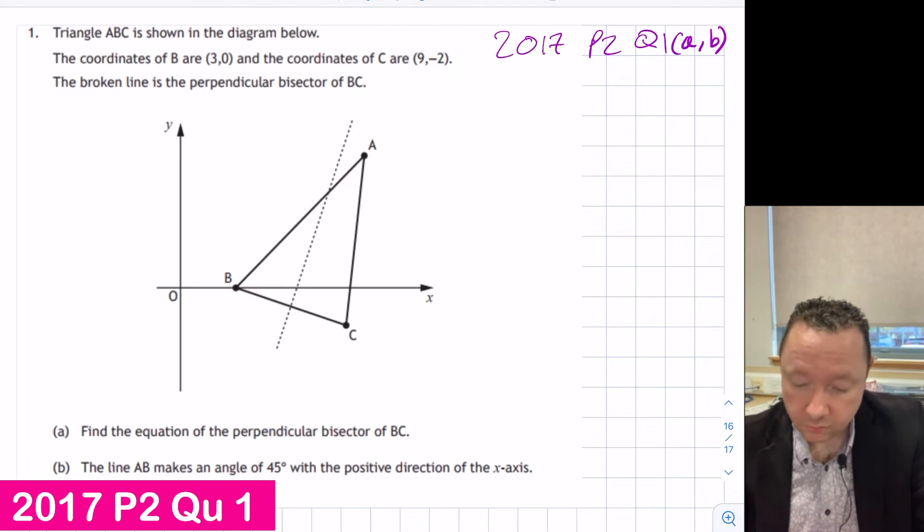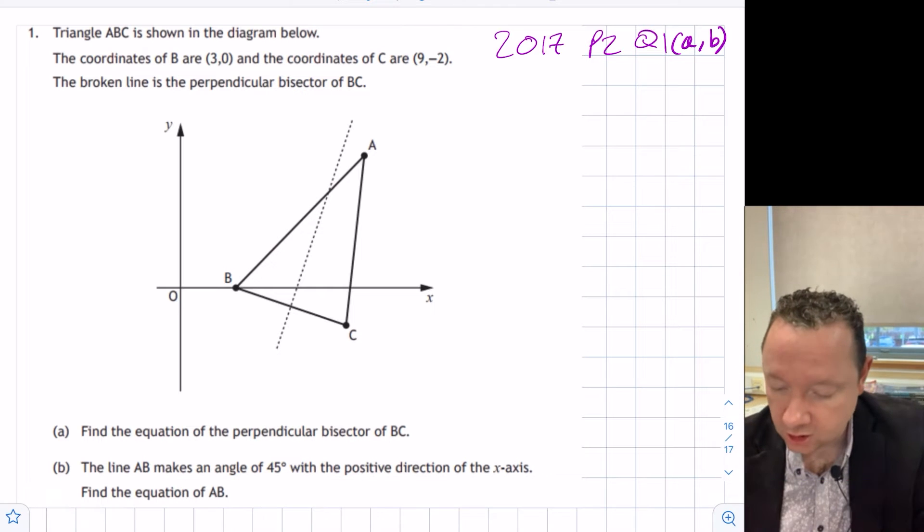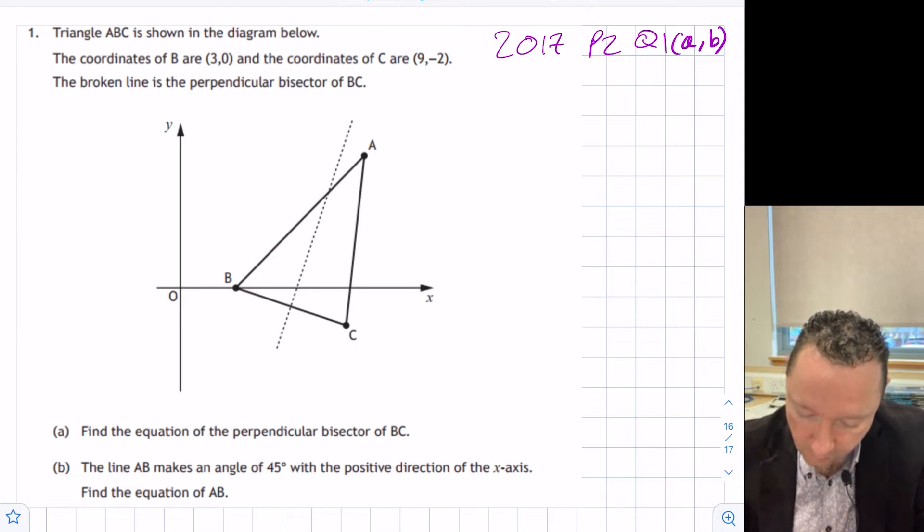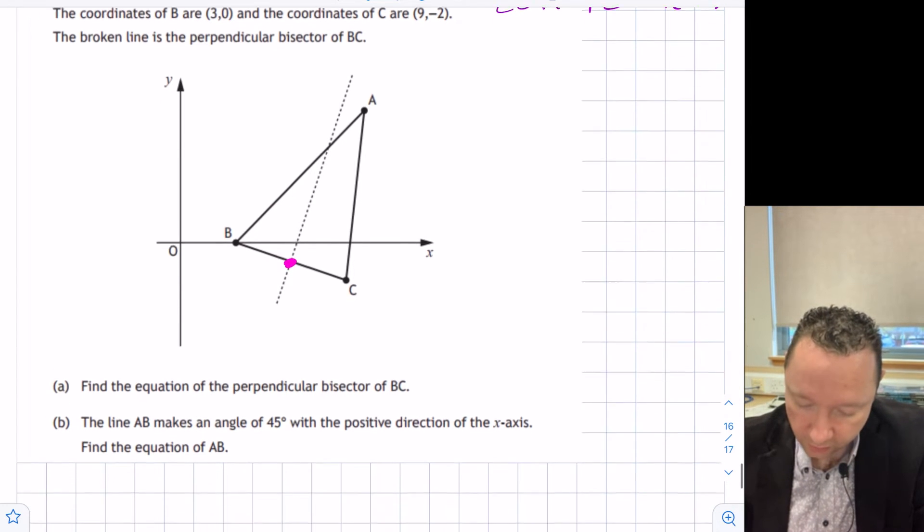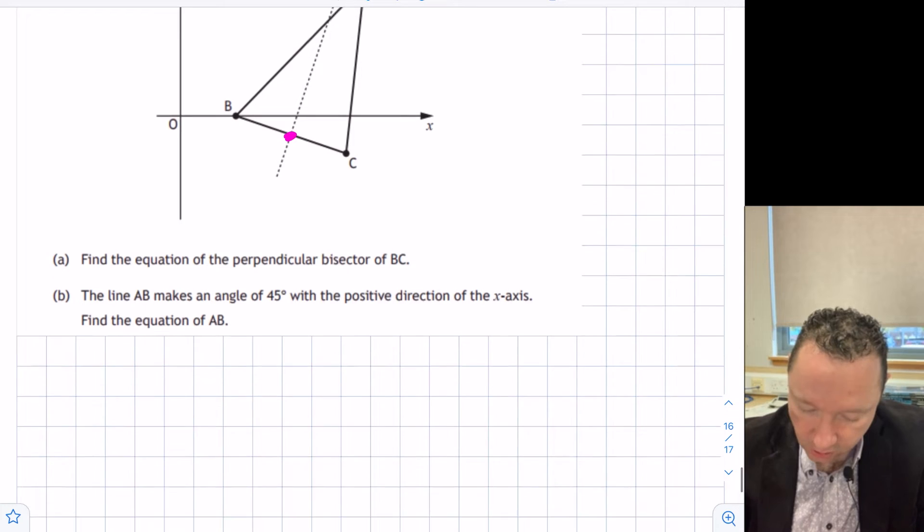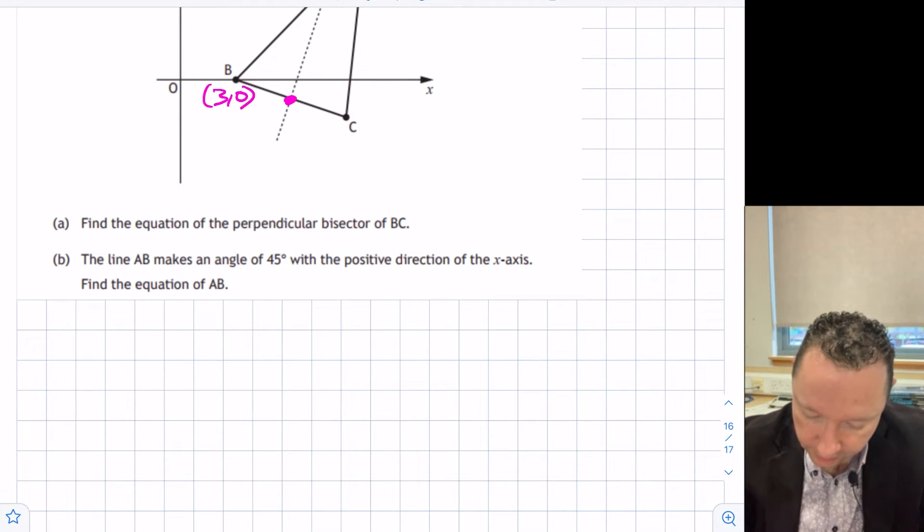Here's a question from 2017 paper 2. Triangle ABC is shown in the diagram below. The coordinates of B are 3, 0 and the coordinates of C are 9, negative 2. The broken line is the perpendicular bisector of BC. Part a, find the equation of the perpendicular bisector of BC. So we're going to need the midpoint and we're going to need the gradient. Let's start off with the gradient.